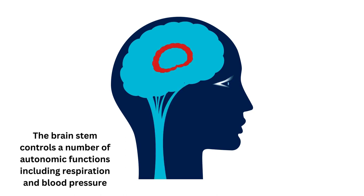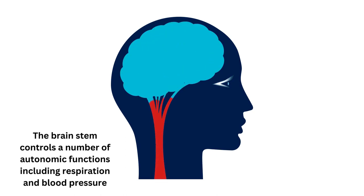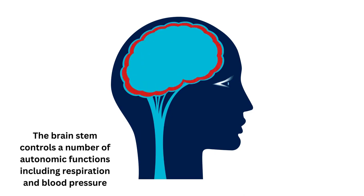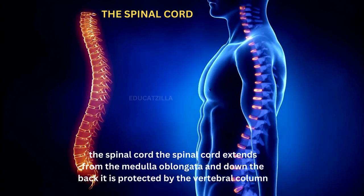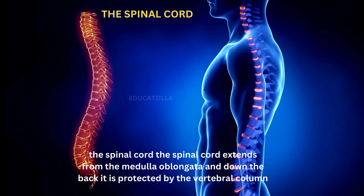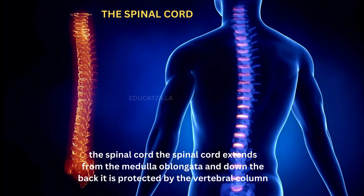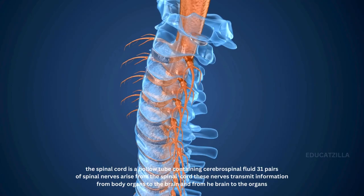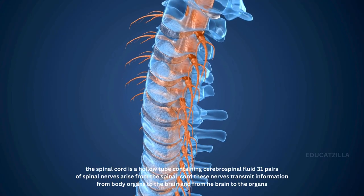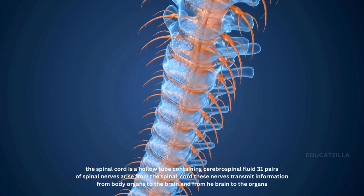The brain stem controls a number of autonomic functions including respiration and blood pressure. The spinal cord extends from the medulla oblongata down the back and is protected by the vertebral column. It is a hollow tube containing cerebrospinal fluid.